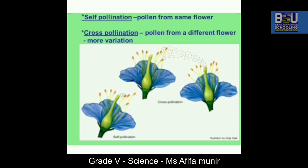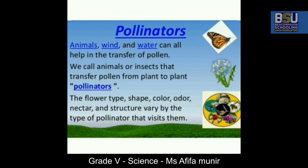There are two types of pollination. Self-pollination: pollen from the same flower. Cross-pollination: pollen from a different flower, with different variations. There are also pollinators — animal, wind, and water can all help in the transfer of pollen. We can call animals or insects that transfer pollen from plant to plant pollinators.